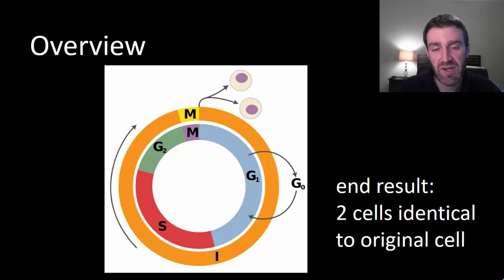Let's talk about the cell cycle. Unlike meiosis, with mitosis the goal is to make two cells that are identical to that original cell if you're sending one cell through the cell cycle.